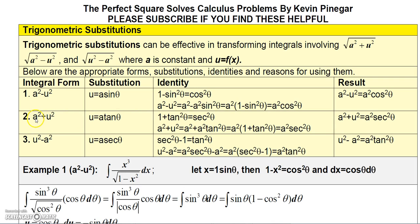If you have the a squared plus u squared type of integral, you could let u equal a tangent theta. Then a squared plus u squared equals a squared plus a squared tangent squared theta. Factoring out a squared gives 1 plus tangent squared theta, and 1 plus tangent squared theta is secant squared theta. So a squared plus u squared equals a squared secant squared theta.